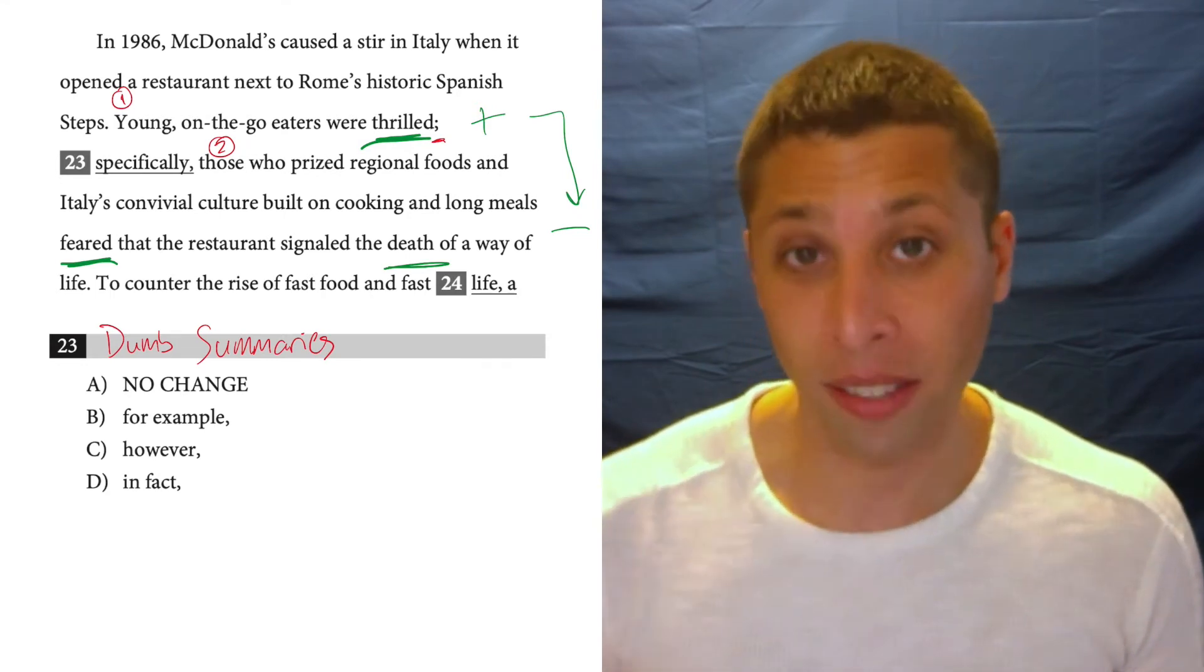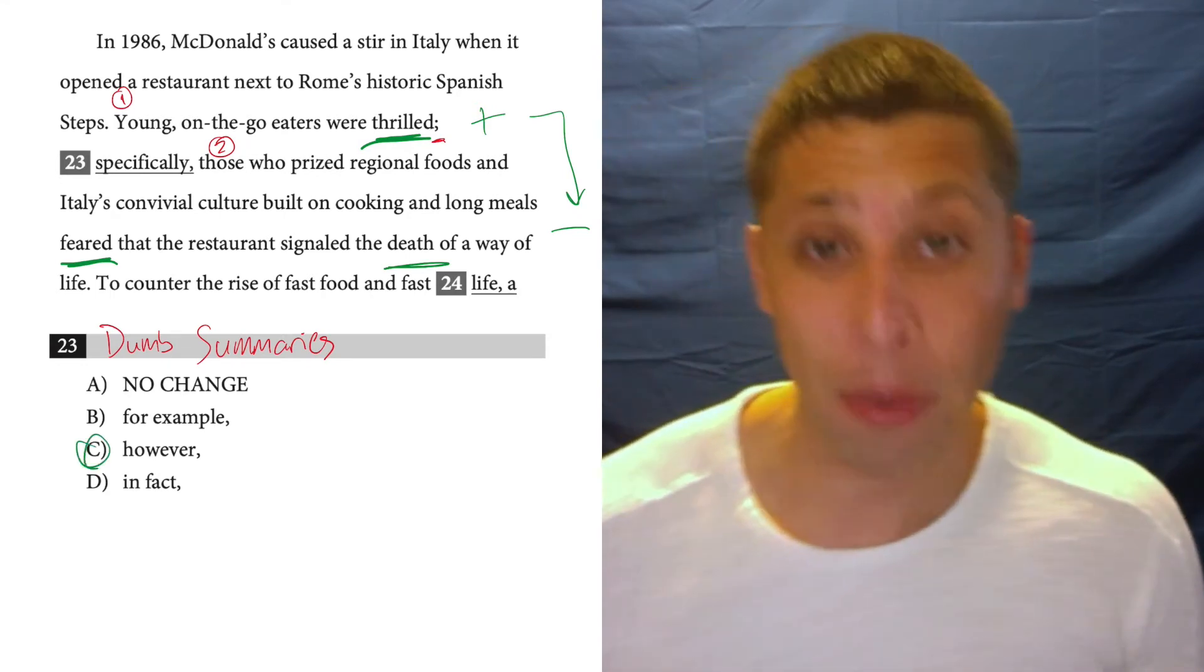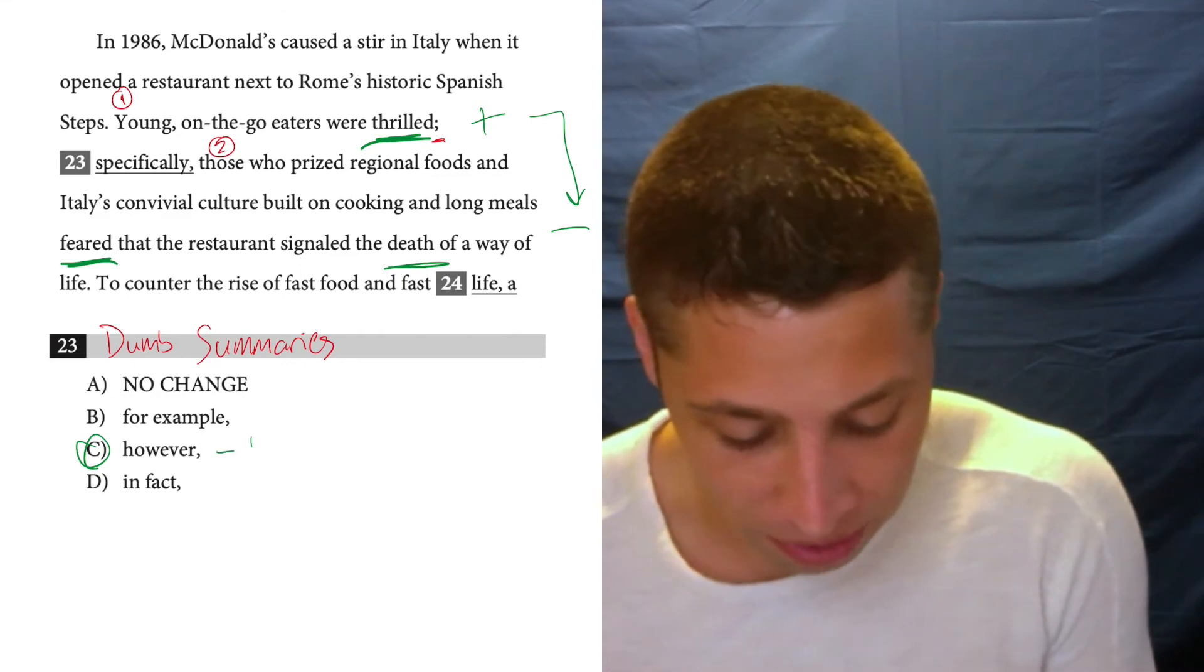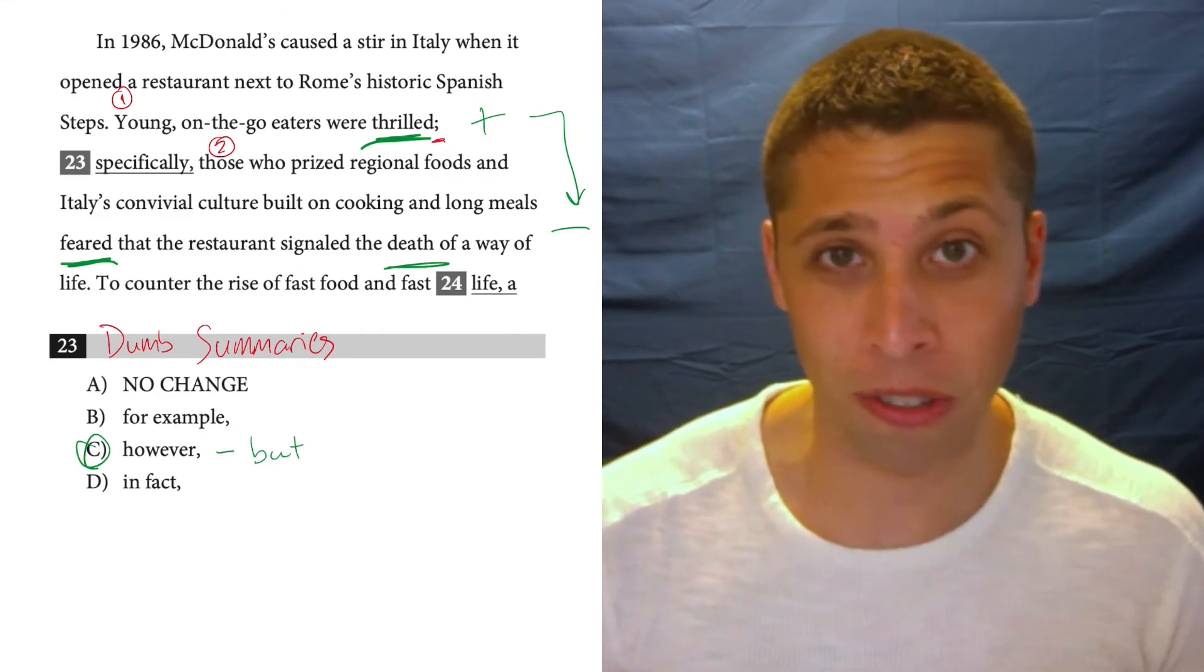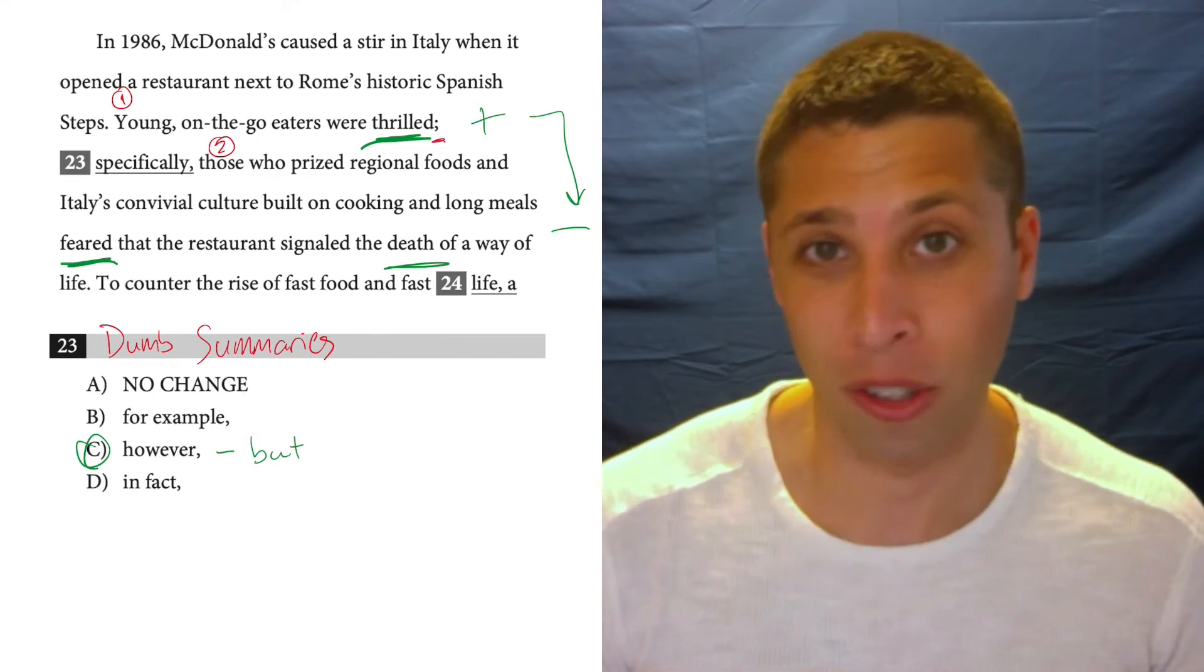What transition word does that? Well, however does that. It's a contrast word. It basically means the same thing as but and it lets us switch the connotation with just one word.